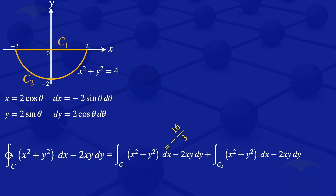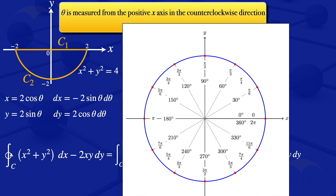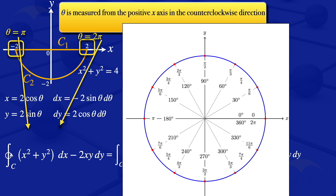We now need to determine the limits of integration, since the varying quantity is now theta. Theta is measured from the positive x-axis in the counterclockwise direction. Comparing with the semicircle in the third and fourth quadrant, at the point minus 2 we have theta equals pi, and where the semicircle ends we have theta equals 2 pi. So theta varies between pi and 2 pi.